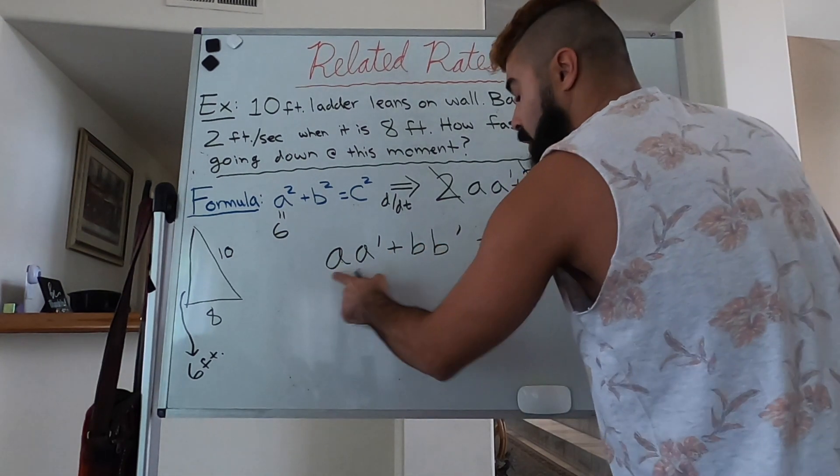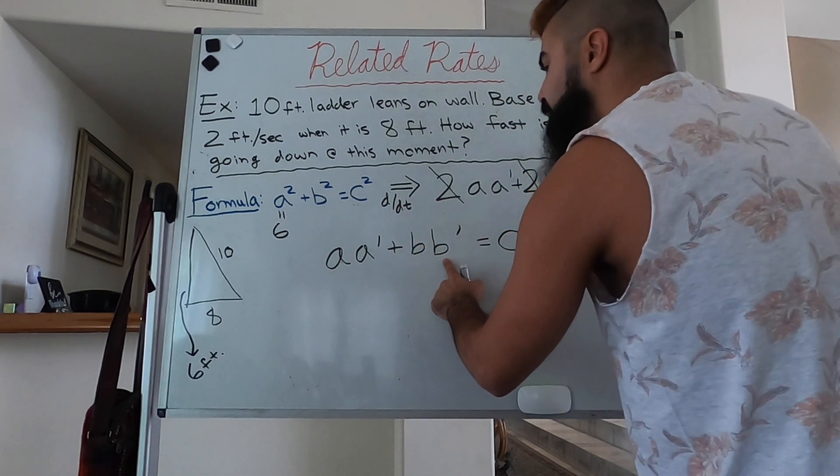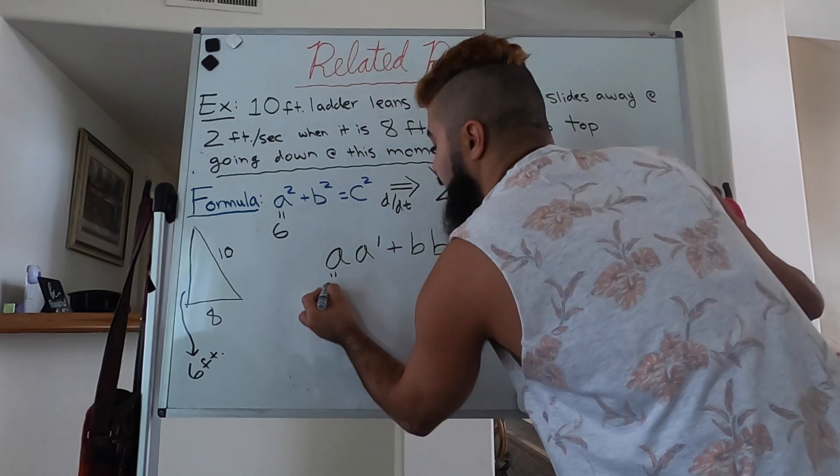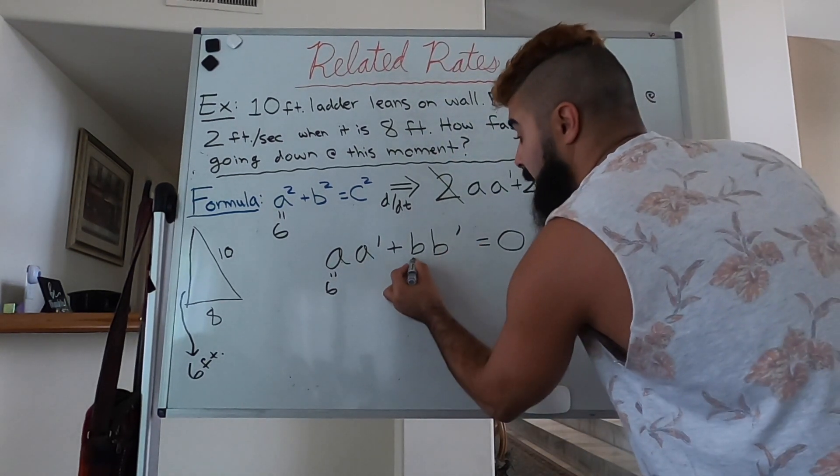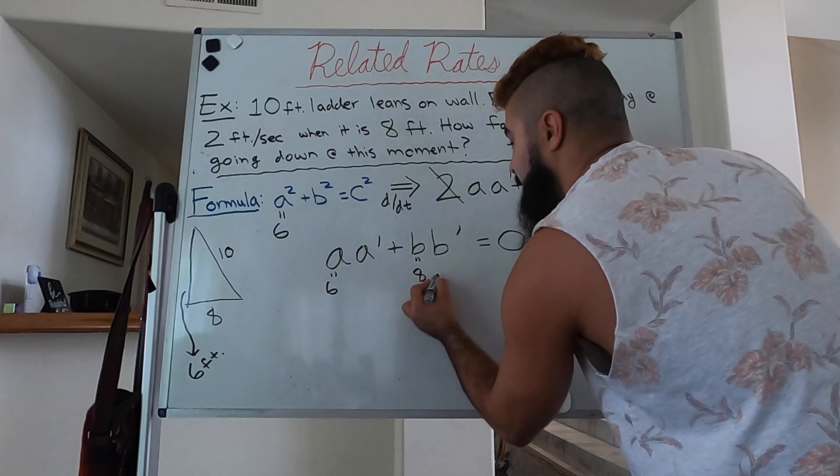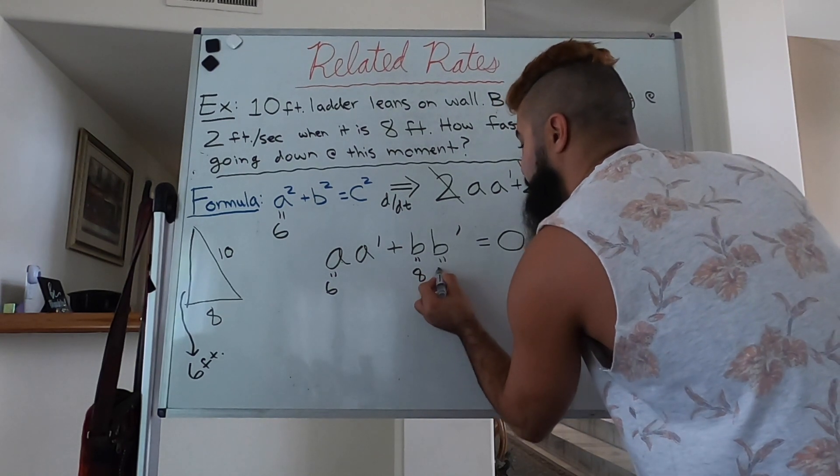But we know what a is, we know what b is, we also know b'. a is given to us as 6—well, we're not given it but we figured it out. b was given to us as 8. b' is given to us as positive 2. So we just gotta find a'.